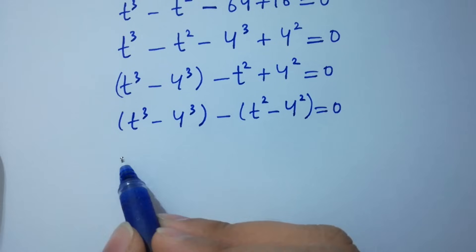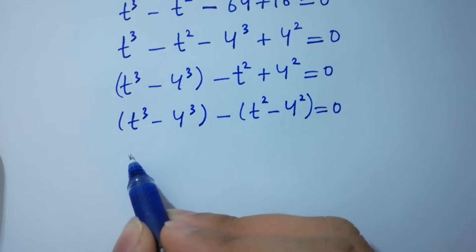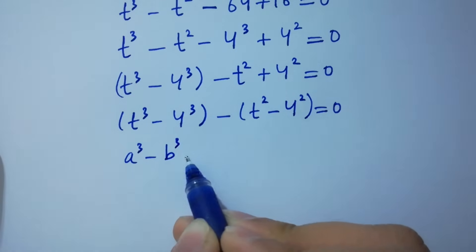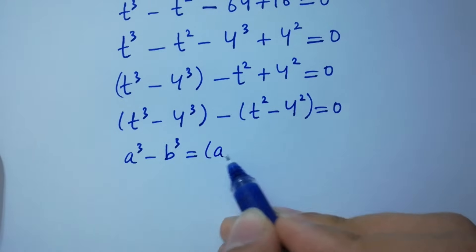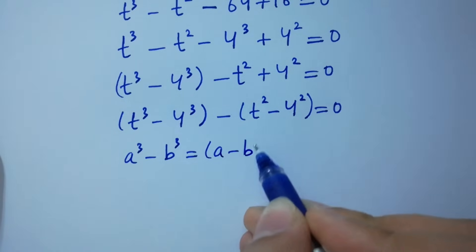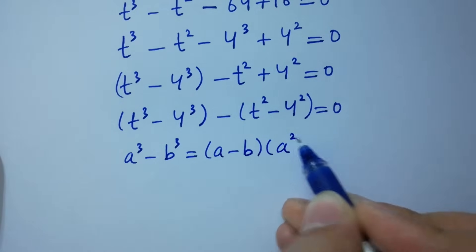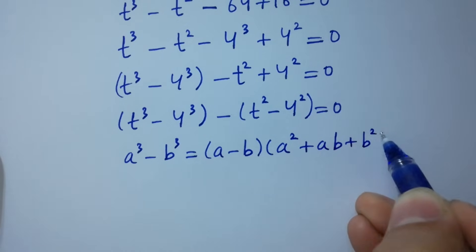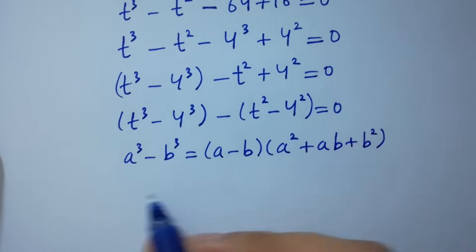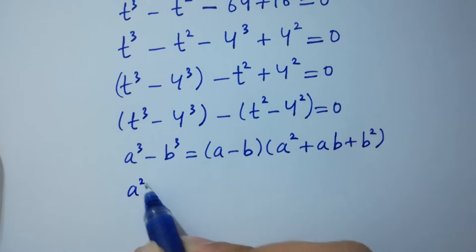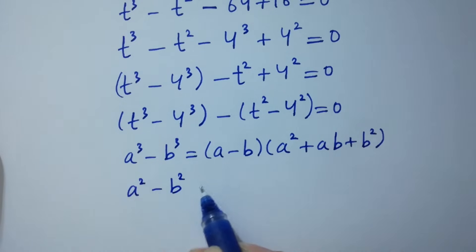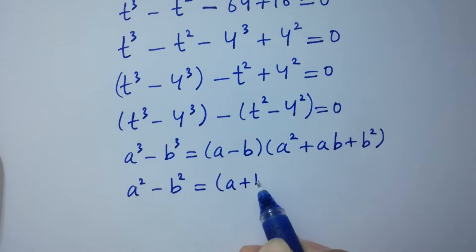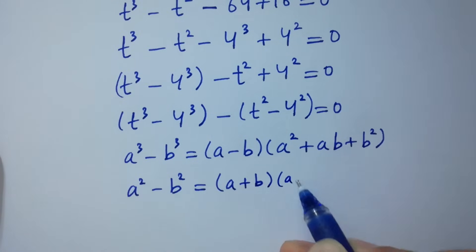As we know, a cubed minus b cubed equals (a minus b)(a squared plus ab plus b squared), and a squared minus b squared equals (a plus b)(a minus b).